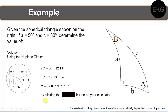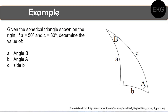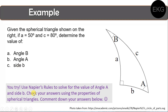That is how to solve for angle B. Now it is your turn — solve for angle A and side b using Napier's two rules. After solving, check your answers using the properties of spherical triangles — recall those properties from the video. Make sure your answers are in accordance with the properties of spherical triangles, then comment your answers below.